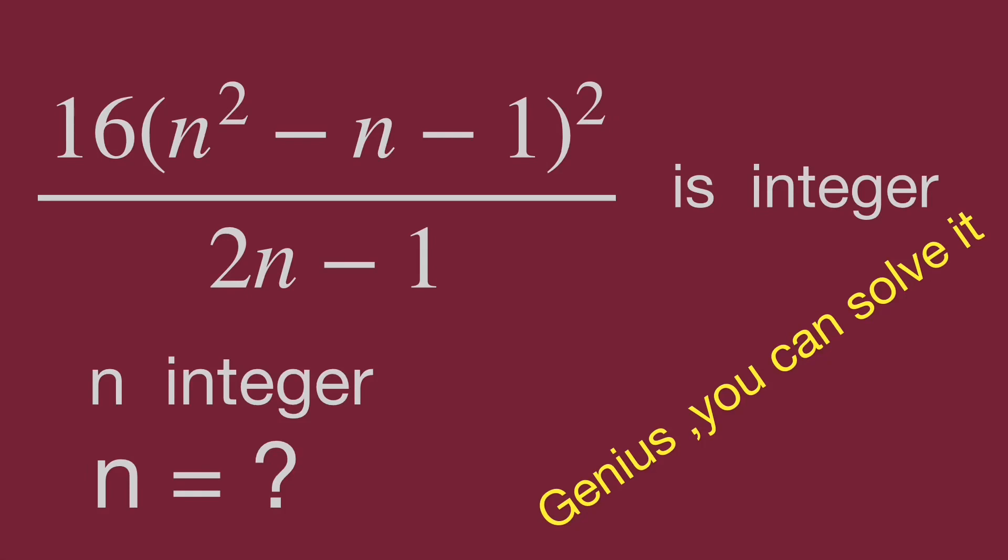We know 16 times quantity n squared minus n minus 1 squared over 2n minus 1. The value is integer. Given n is integer, find the value for n.